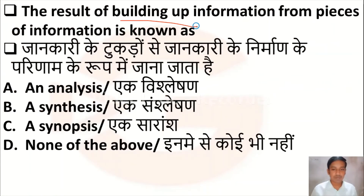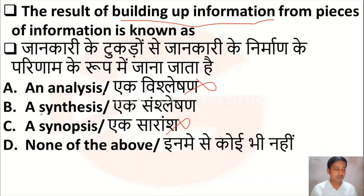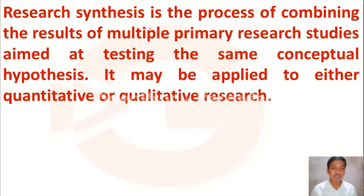The next question is: the result of building up information from pieces of information is called — Option A: analysis, Option B: synthesis, Option C: synopsis, Option D: none of the above. Analysis means breaking down information into different parts, and synopsis gives an overall idea. Option B — synthesis — is the right answer.